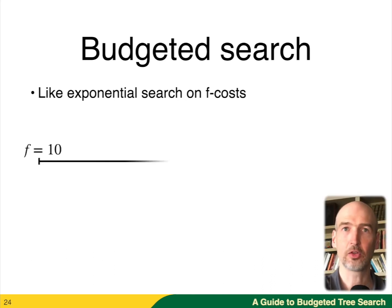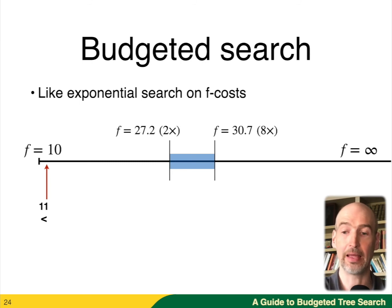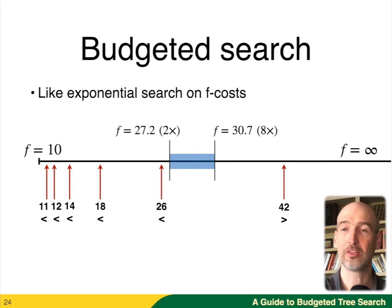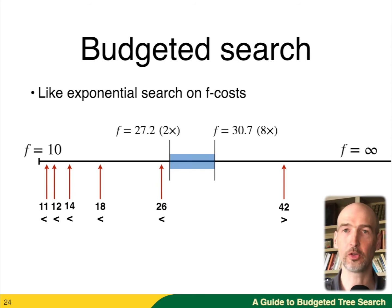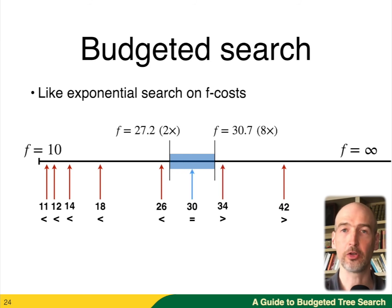Setting up the same problem: we know F cost 10 gives 100 nodes, so now we're looking for something between 200 and 800. We sample F costs 11, 12, 14, 18, 26 — all of these are less than the bound. We sample 42, which is greater than the bound. When we sample this, we're actually doing a depth first search bounded by F cost 42, which will terminate when we hit 800 node expansions. Then we do a binary search until we find that we fall within the final window that we want.